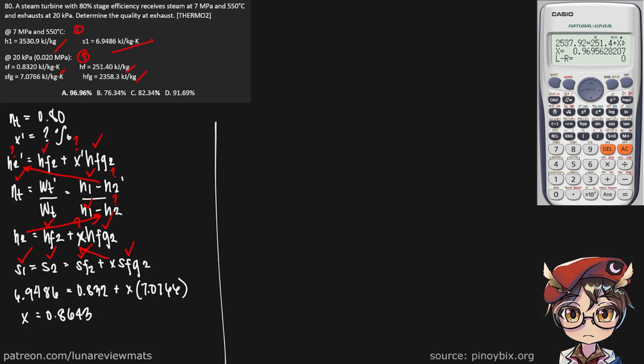So now we know our X, we can find our H2. H2 is 251.4 plus our steam quality times HFG of 2358.3. Let's see what we get. For H2, we get 2289.68, 2289.68 kilojoules per kilogram.